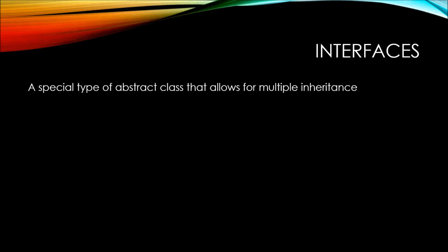If you're going to inherit from an abstract class, you can only inherit from a single abstract class. If you had multiple abstract classes and you wanted to create a class that inherits from multiple abstract classes, you simply could not do it. That's where interfaces come into place. Interfaces are a special type of abstract class specifically to get around this limitation.